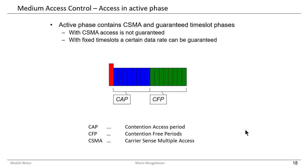If we look into the standard, during the active phase we have two different time frames. The active phase starts with a beacon packet — the red marked package — which is sent at the beginning from the coordinator to the surrounding reduced function devices. After that there is the contention access period, the blue marked area, in which several devices compete for the medium and for being able to send their messages to the coordinator.